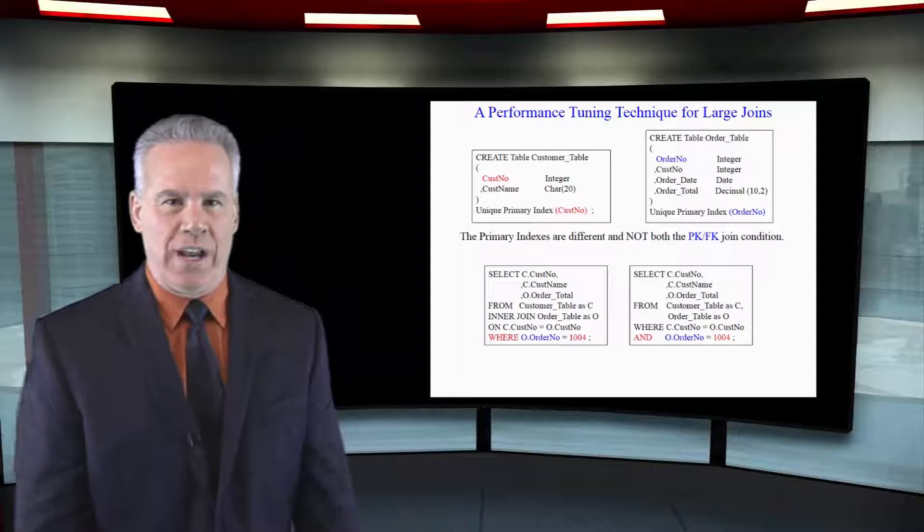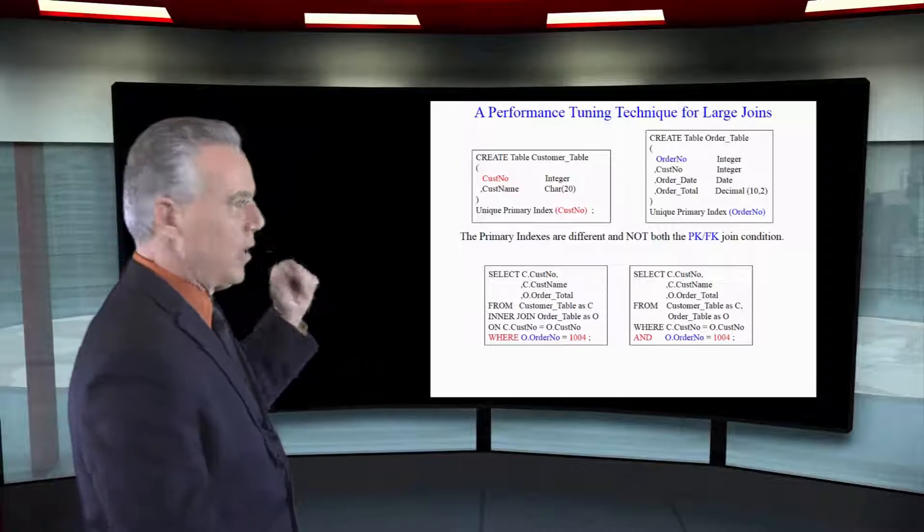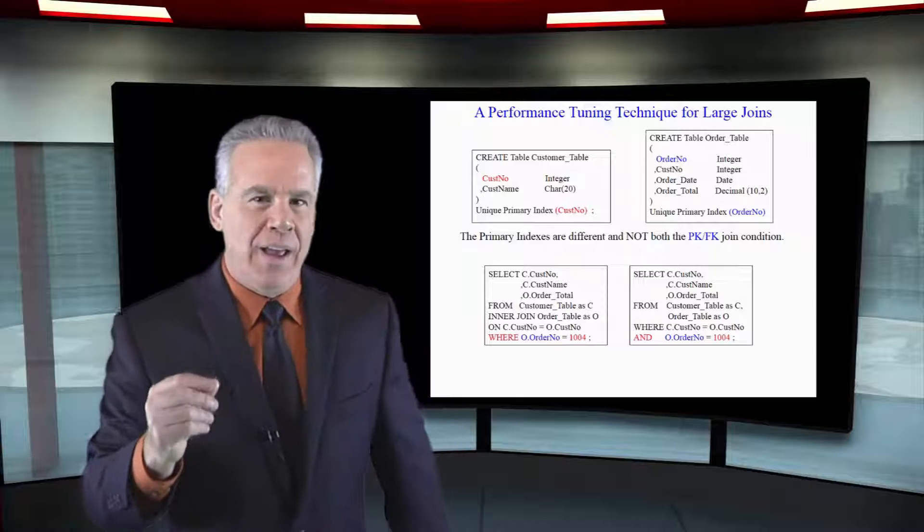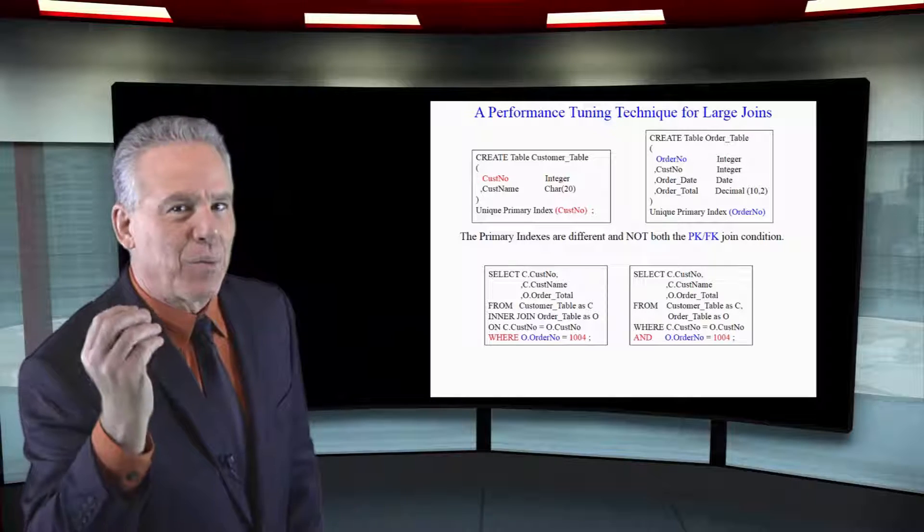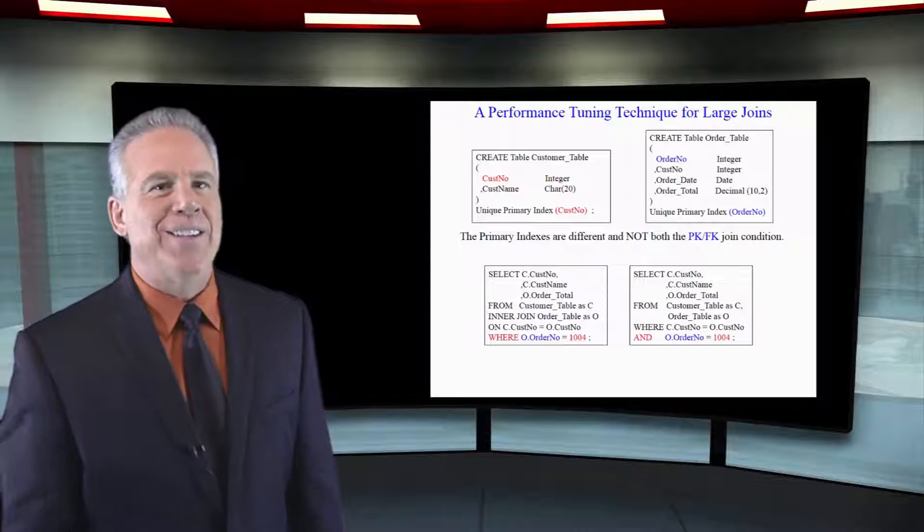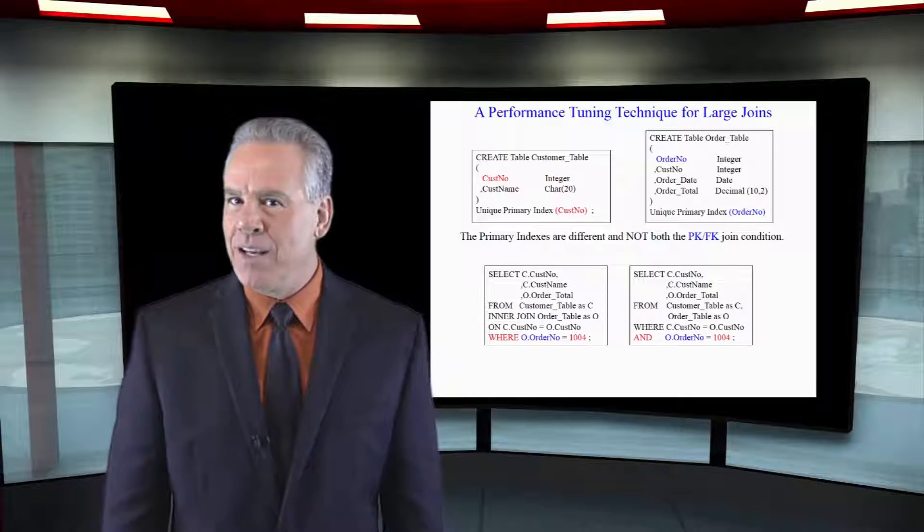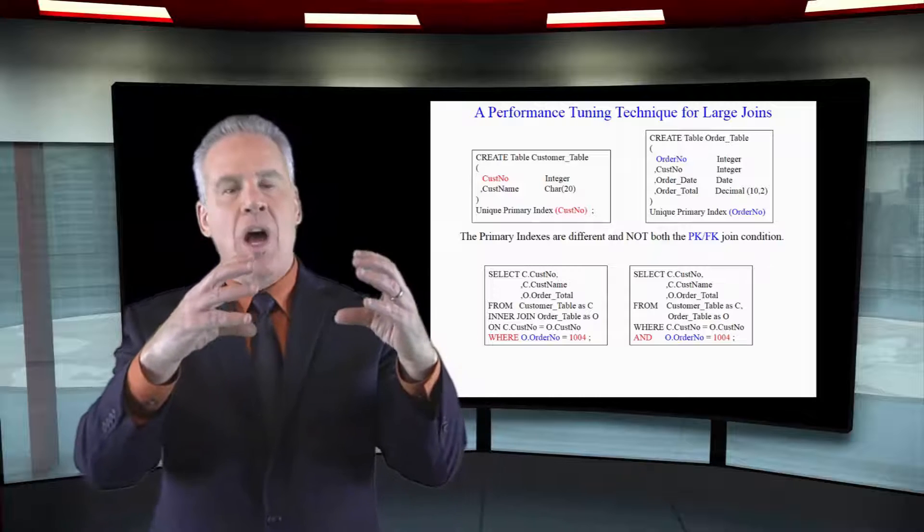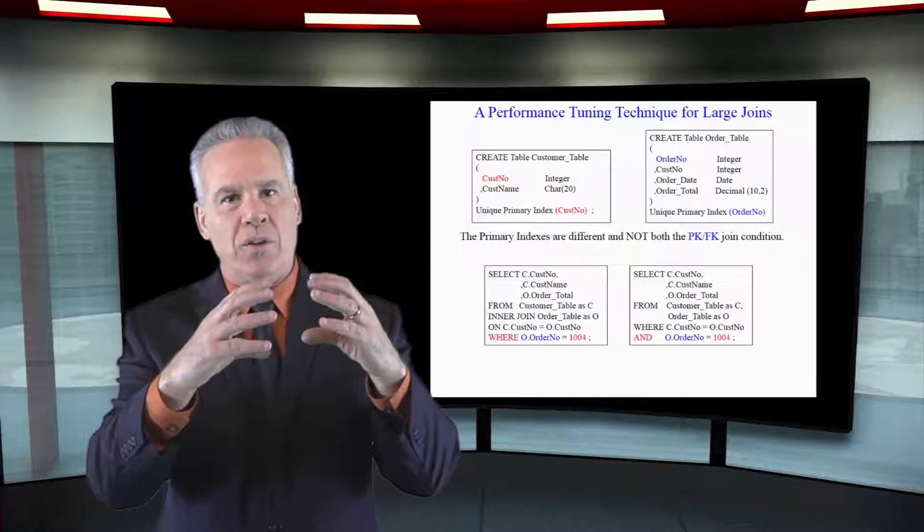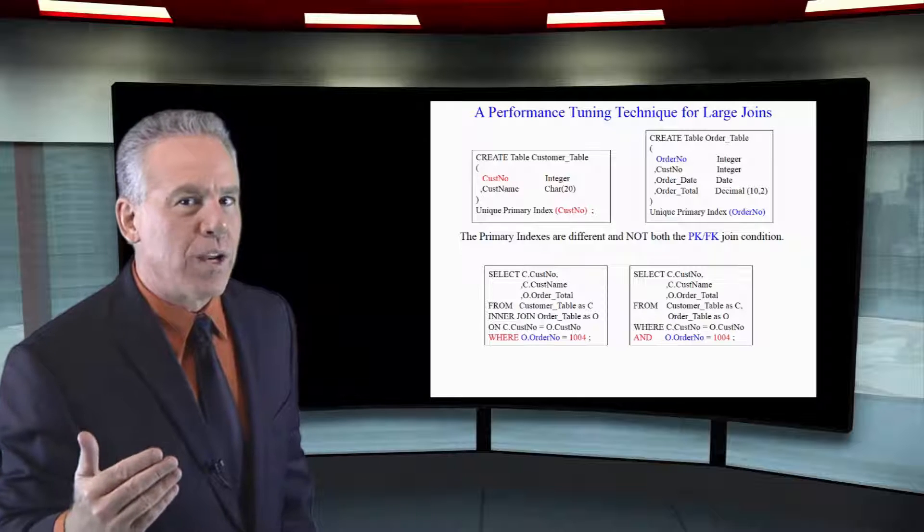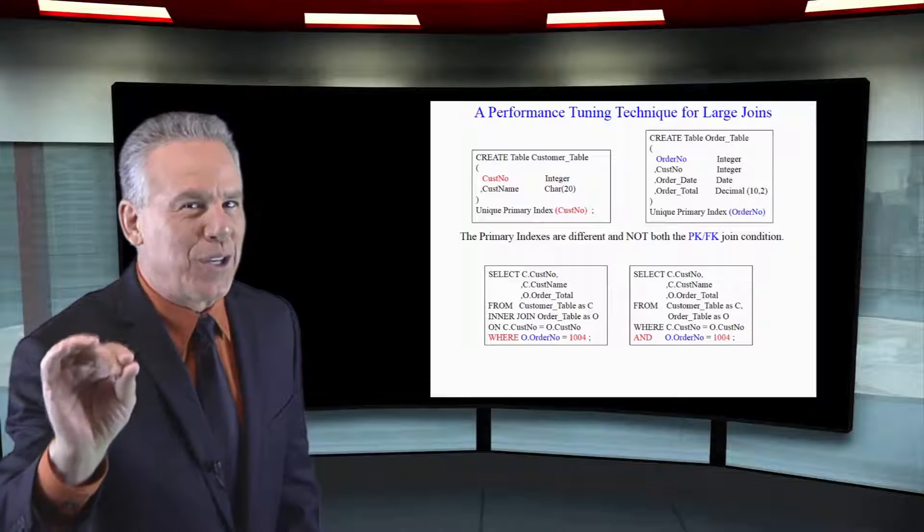We're going to join the order table to the customer table on customer number equals customer number, and we already know that the primary index of the order table is order number. We can cut things down immensely by saying yes, we're going to join these on customer number equals customer number, and I'm looking for order number equal to 1004.